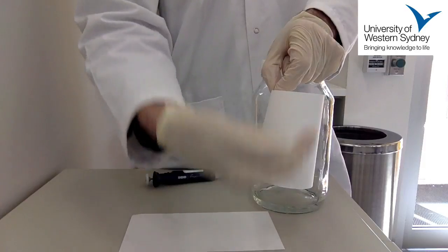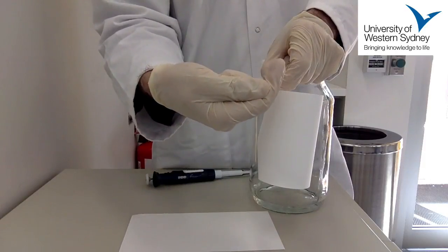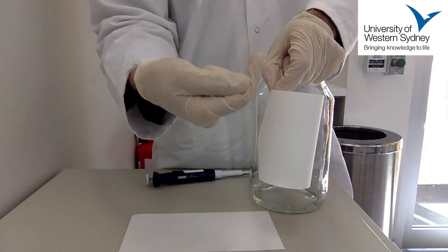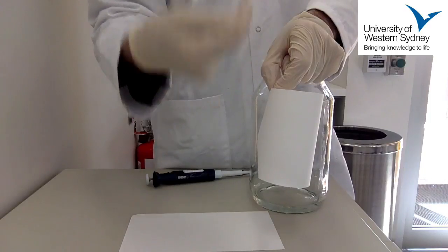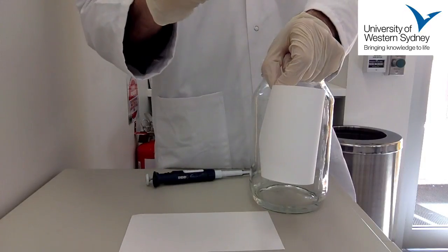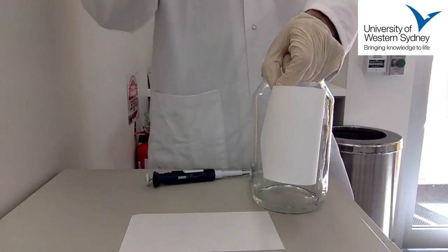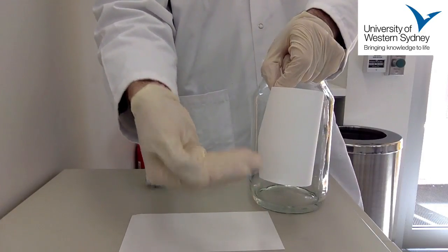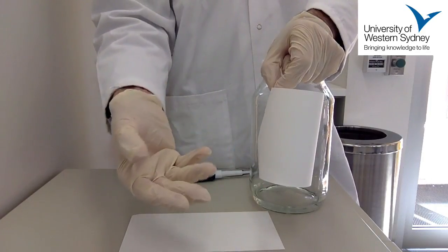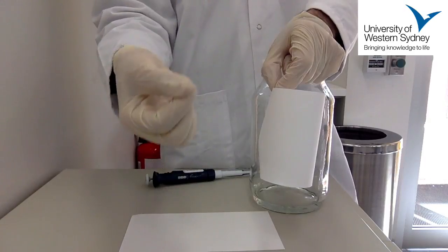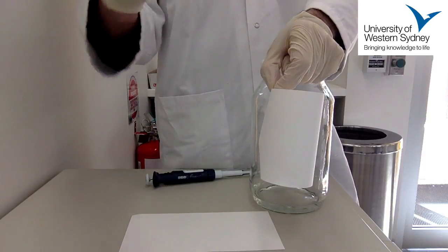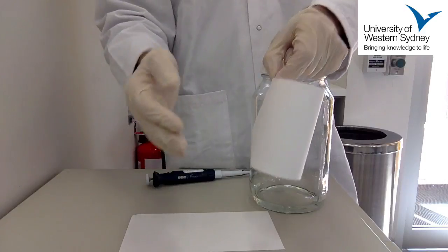So the different sugars will run different distances up the chromatography sheets. And then by the distance the sugar runs, you can measure that RF position. You measure how far the solvent runs and how far your sugars run. You get a ratio, and then you can compare that and use that to identify your sugars.